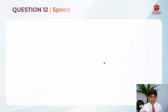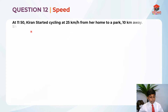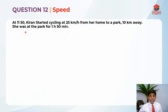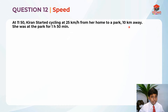Question 12. This question is testing us on the topic of speed. So let's read the question first. At 11:50, Kiran started cycling at 25 km per hour from her home to a park 10 km away. So the park is 10 km away.